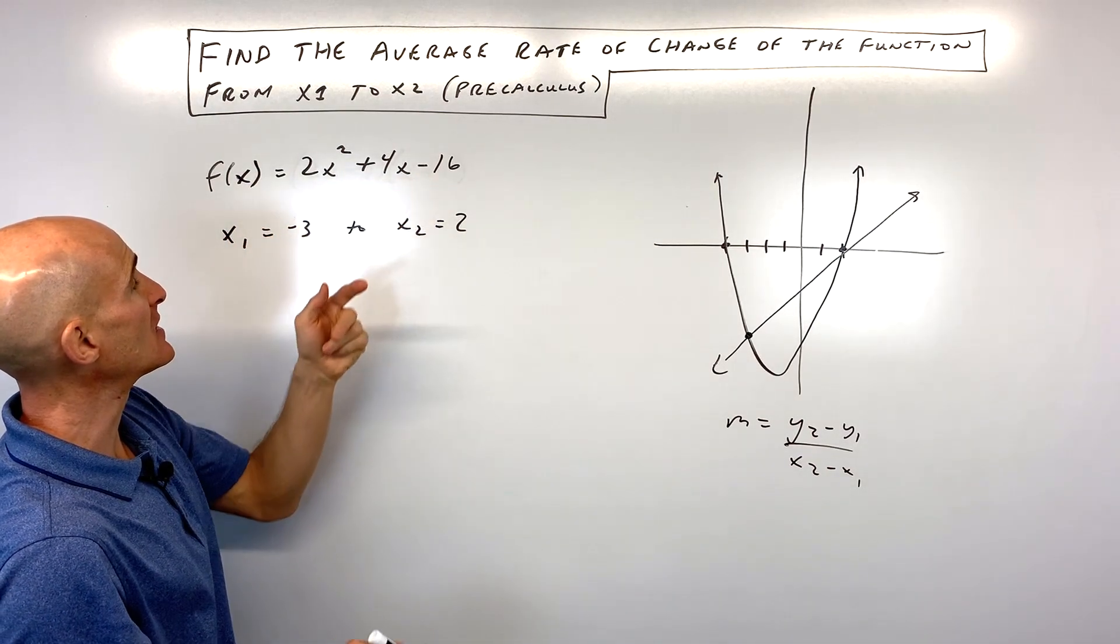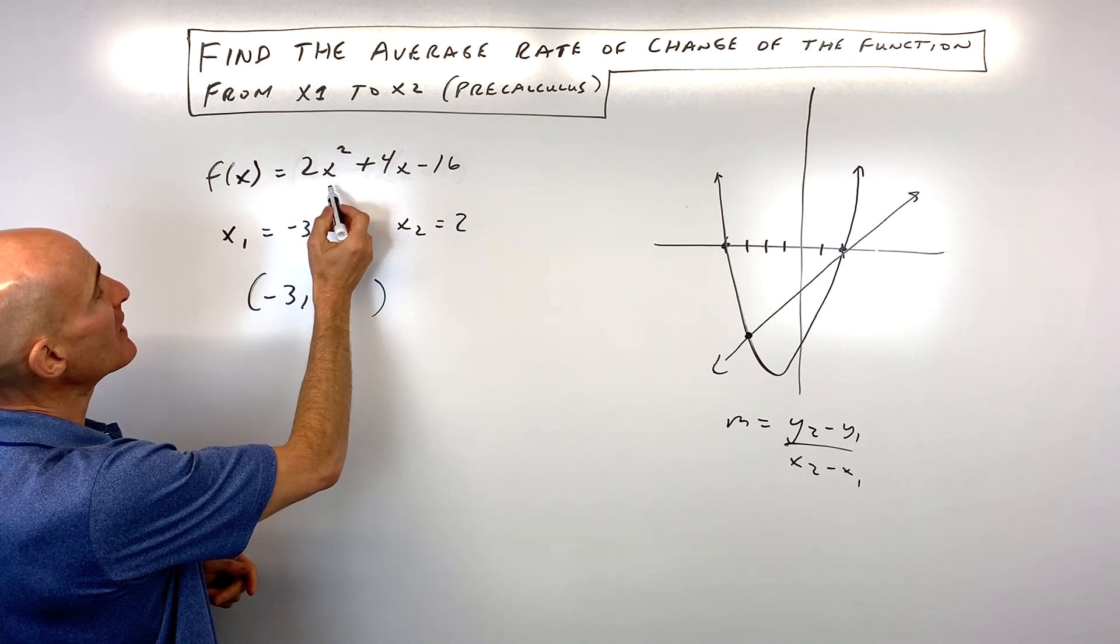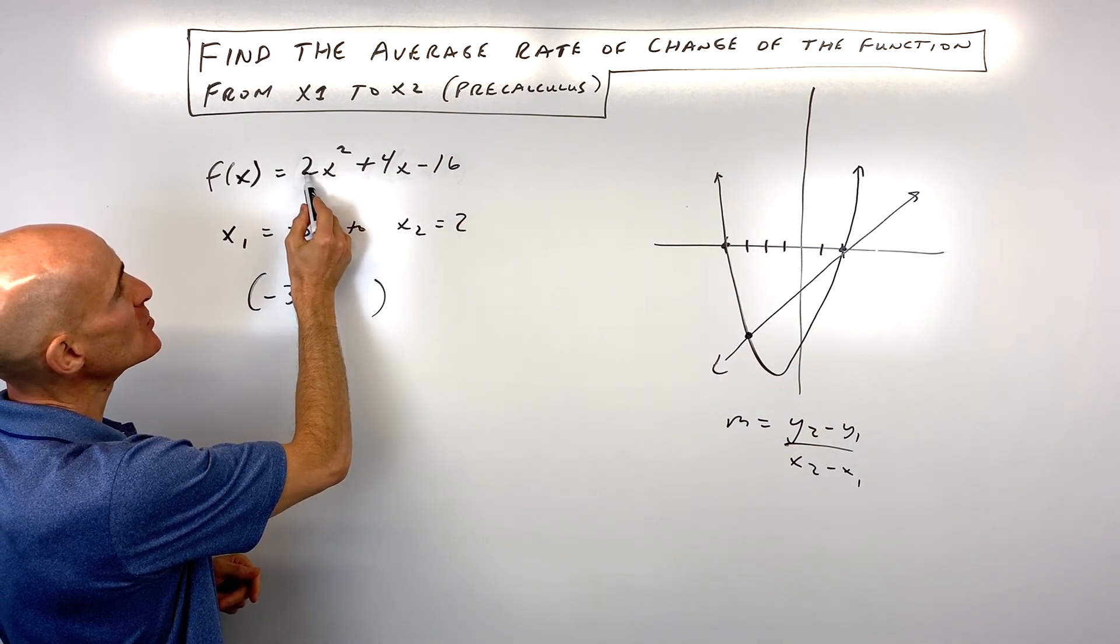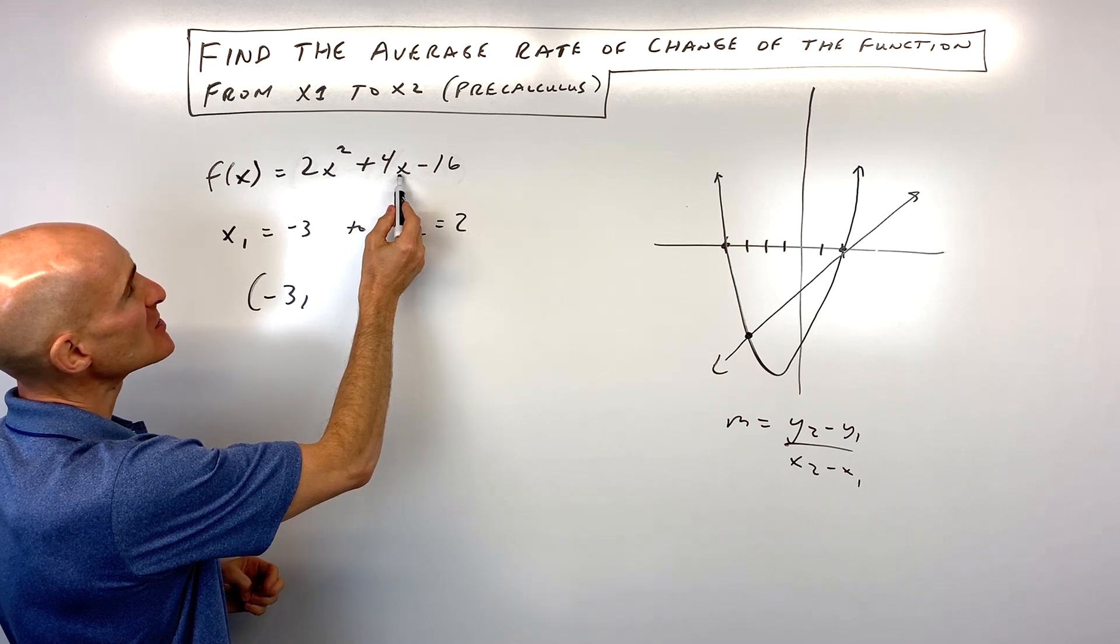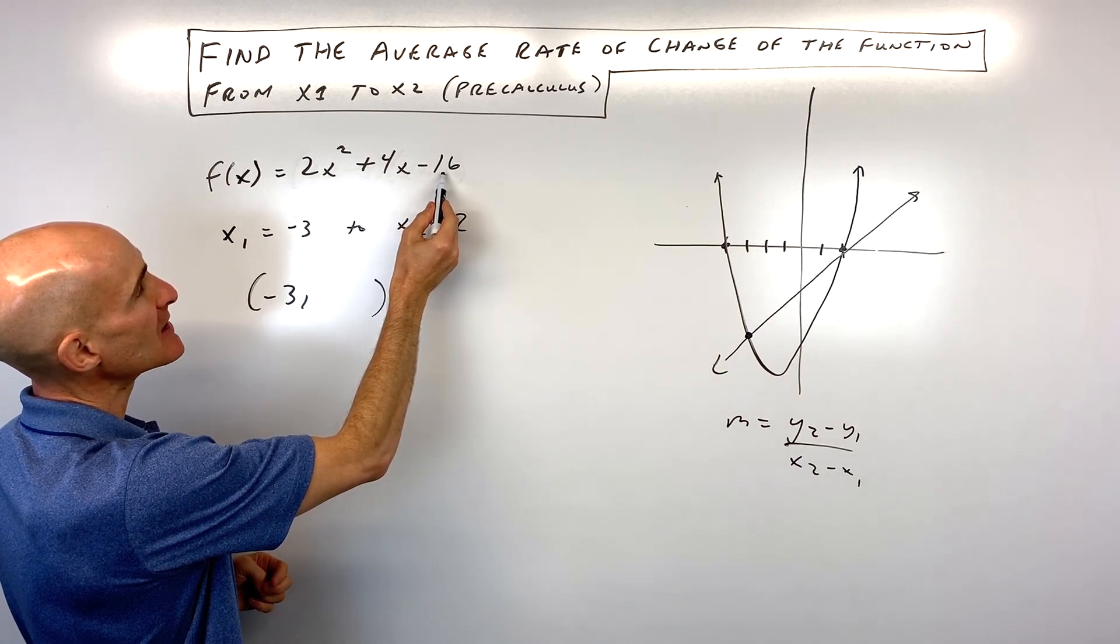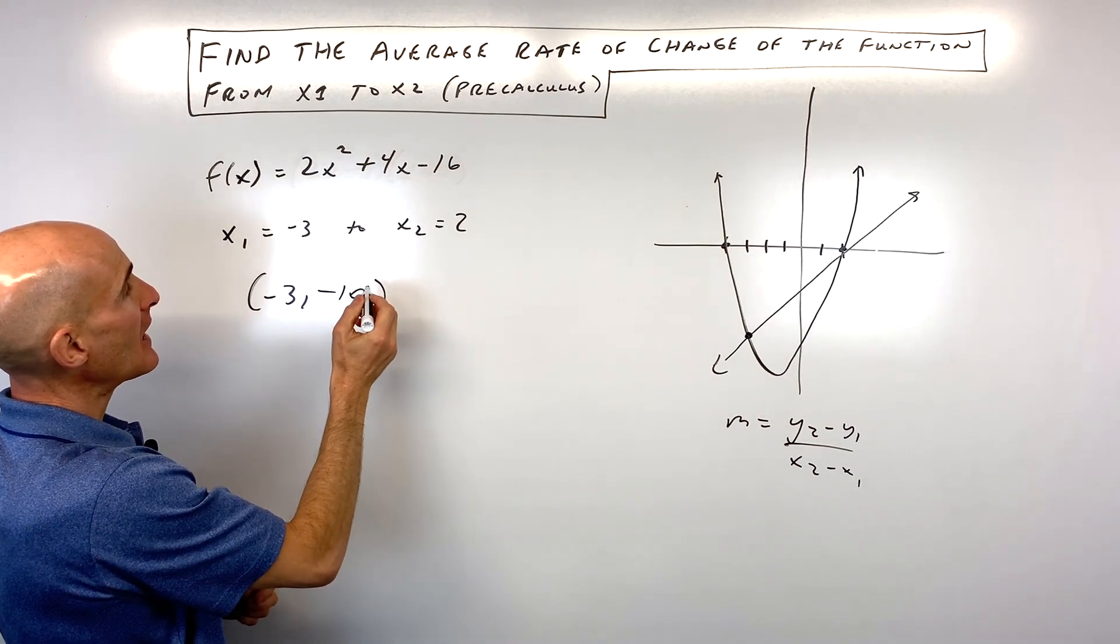This will be -3 comma, let's see: 9 times 2 is 18, minus 12 which is 6, minus 16 is -10.